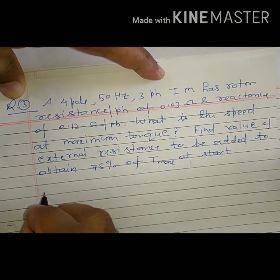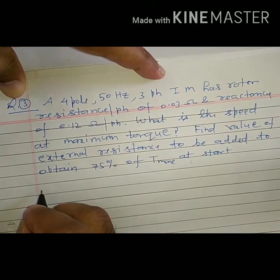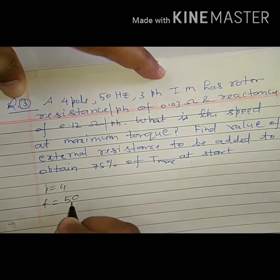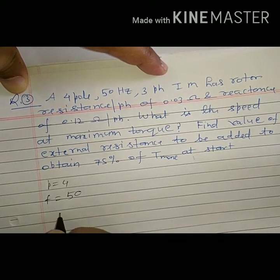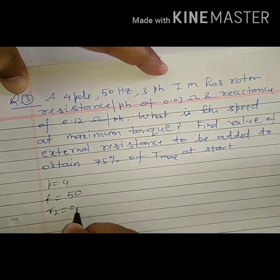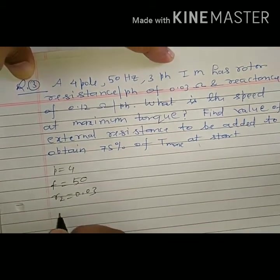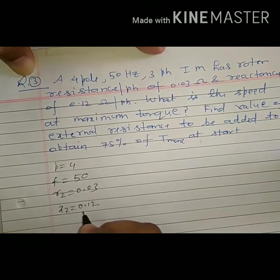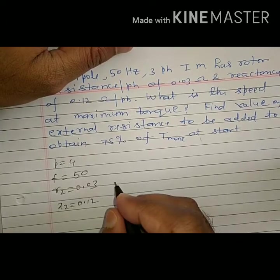First they are asking what is the speed. Given values are P equal to 4, frequency is 50 Hz, rotor resistance R2 is 0.03, and X2 is 0.12. Speed at maximum torque.